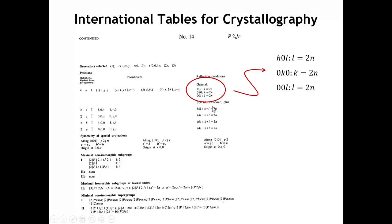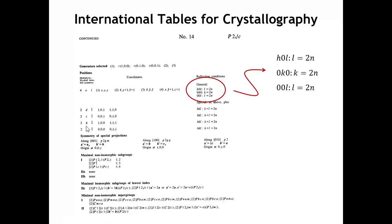Below the general reflection conditions, there are special reflection conditions that are only applicable if we have an atom at only a specific Wyckoff site. So if you had a crystal with P2₁/c symmetry and atoms only on Wyckoff sites 2A through D, you would have an additional reflection condition. Most of the time we don't have atoms just on one Wyckoff site, so normally we can ignore it. But there may be special occasions where you have additional reflection conditions beyond the general ones.